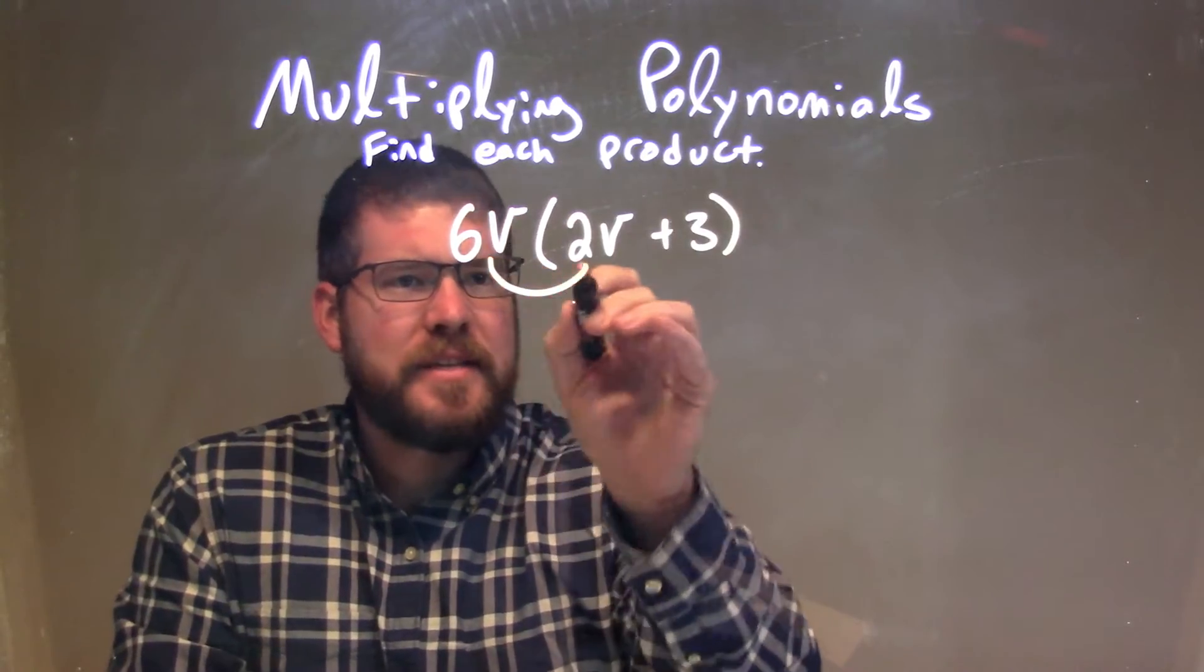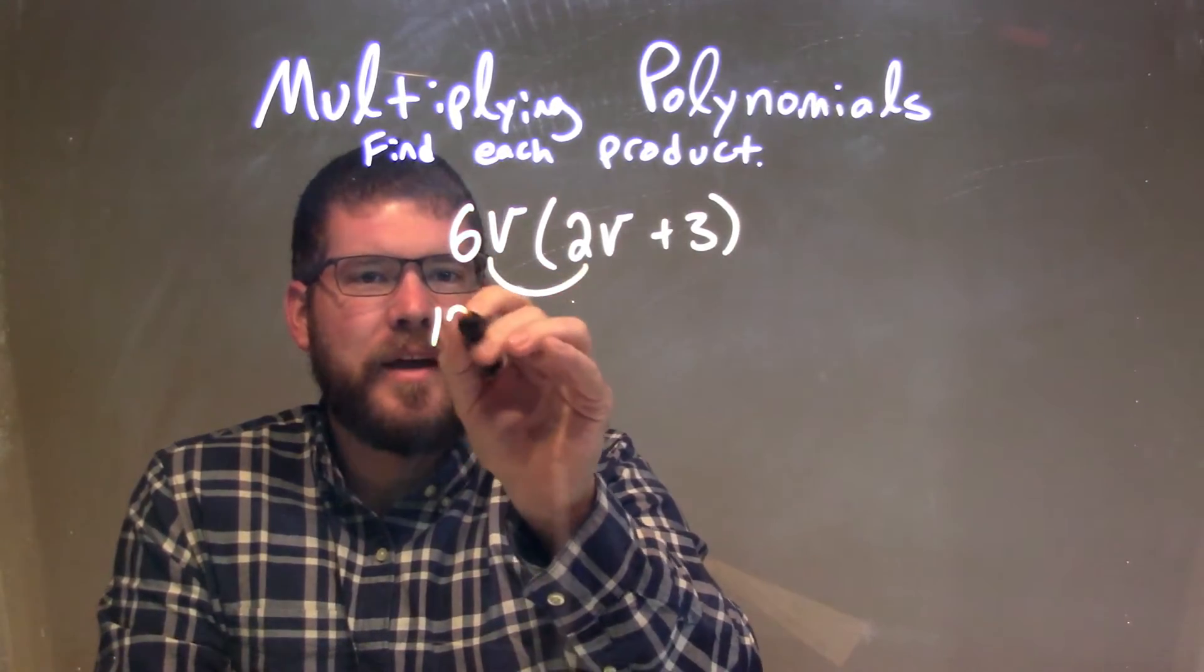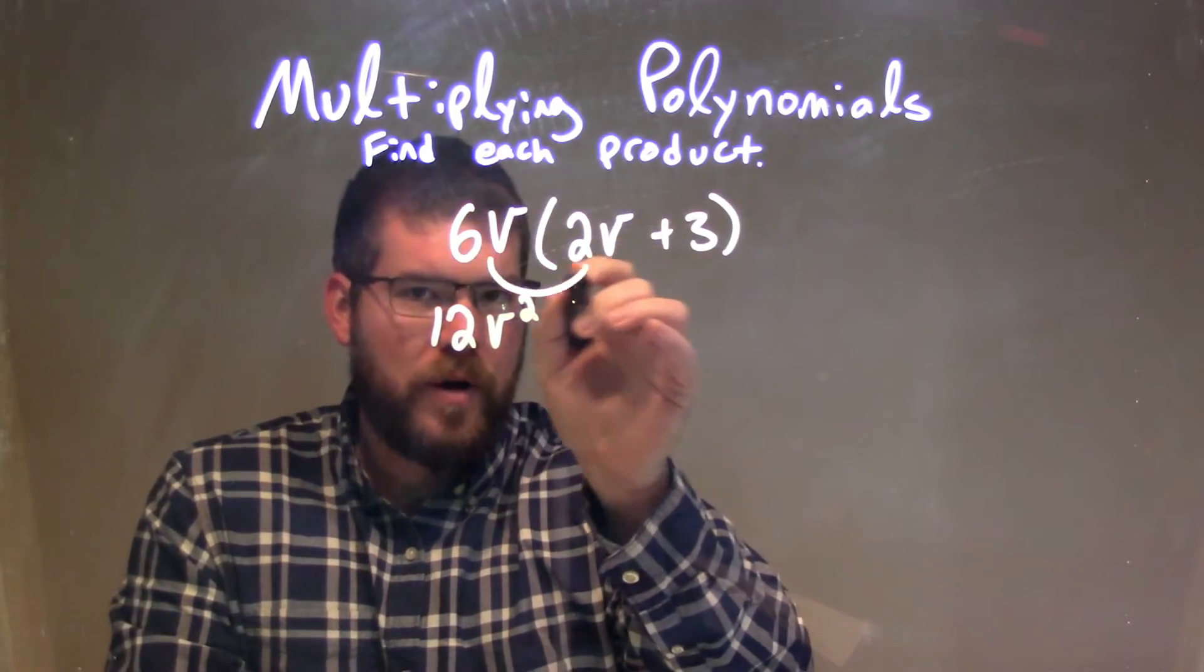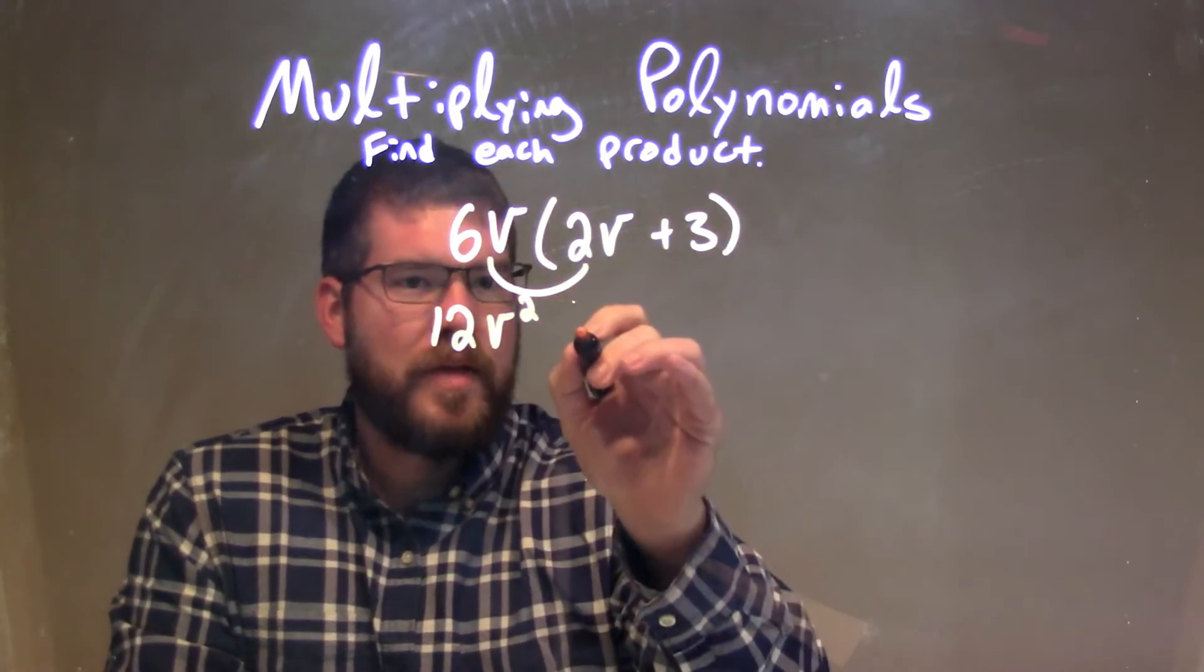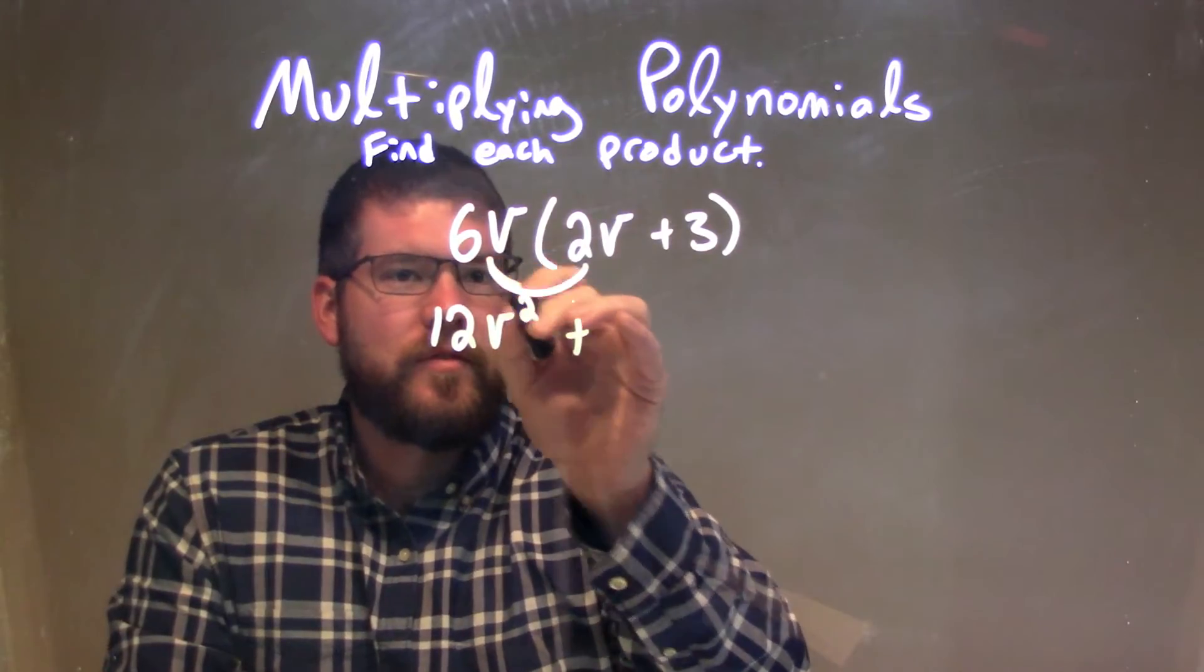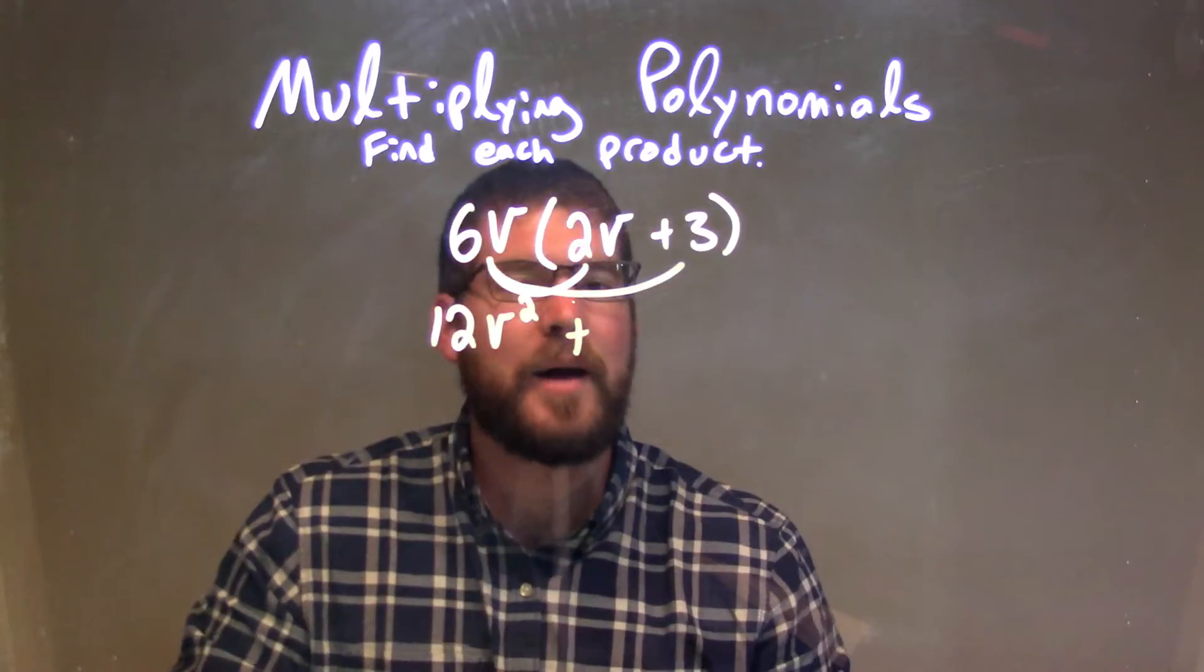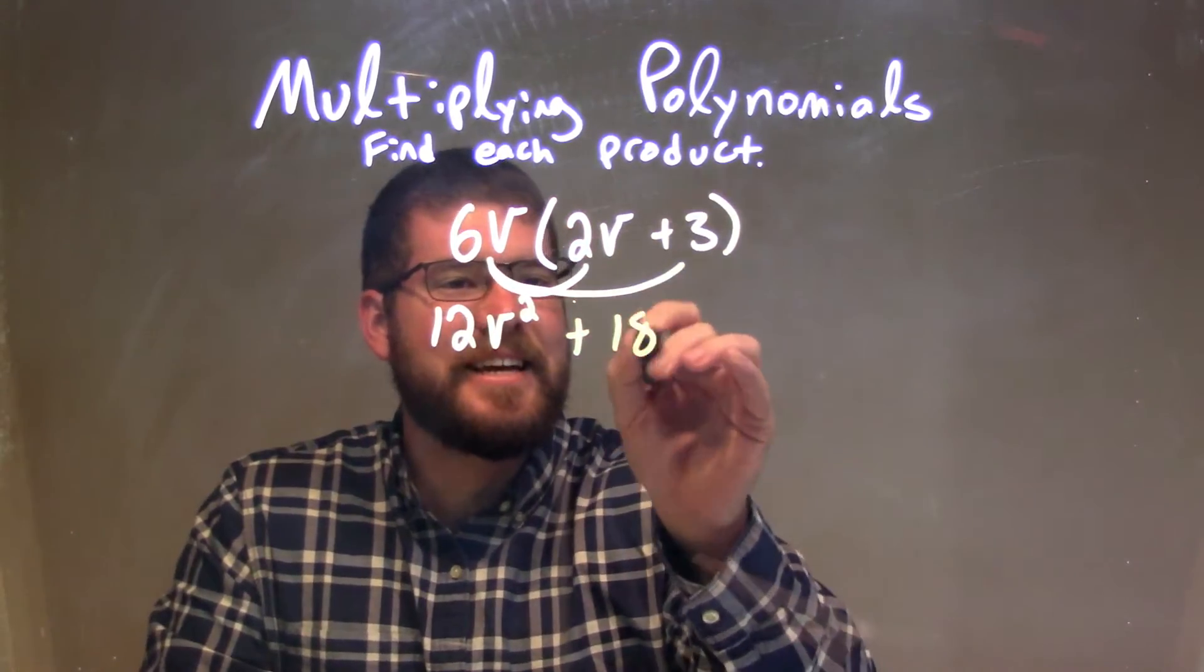So I'm going to take the 6V times 2V, and that's going to give me 12V squared, right? Because V times V is V squared, 6 times 2 is 12. Then I got to distribute the 6V also to the 3. 6V times 3 comes out to be 18V.